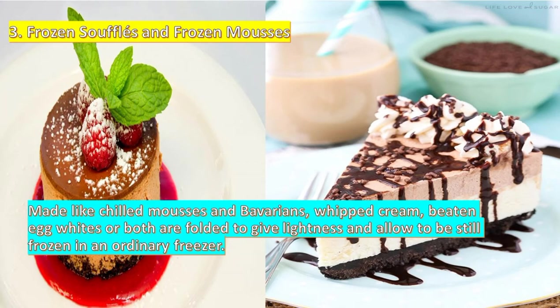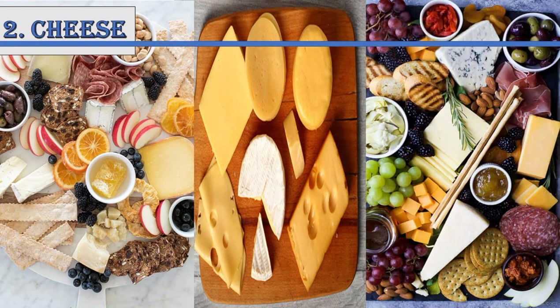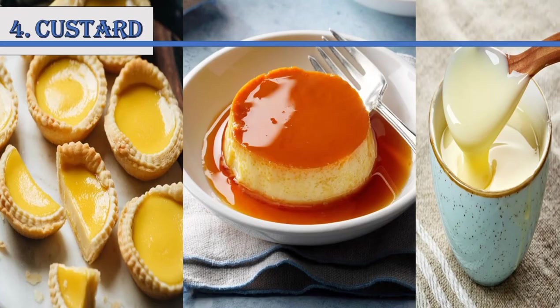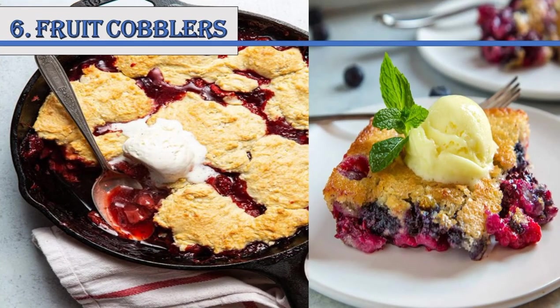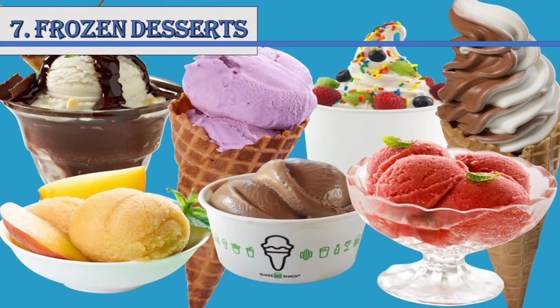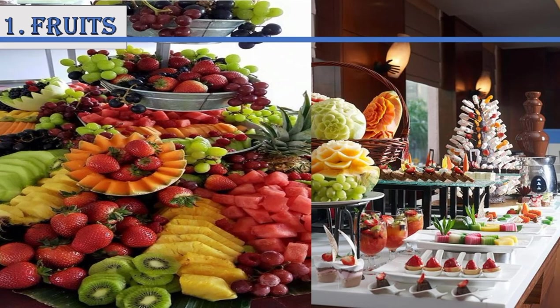Now let's recall the seven types of desserts. First is fruits. Second is cheese. Number three is gelatin. Number four is custard. Five, puddings. Number six, fruit cobblers. And number seven, frozen desserts. What type of dessert is not a fruit pie? It's fruit cobblers. Then, what dessert is the simplest and nutritious? Very good — it's fruit desserts.